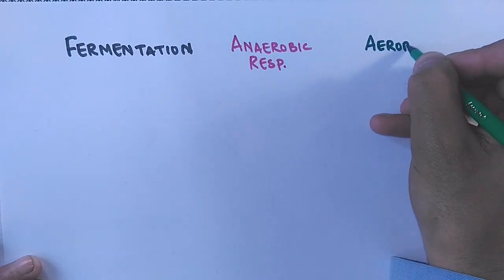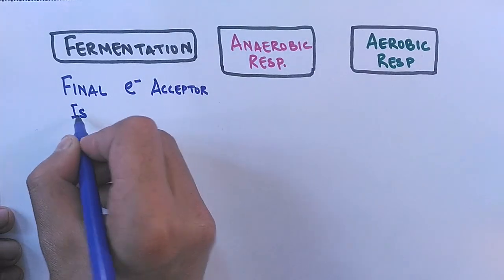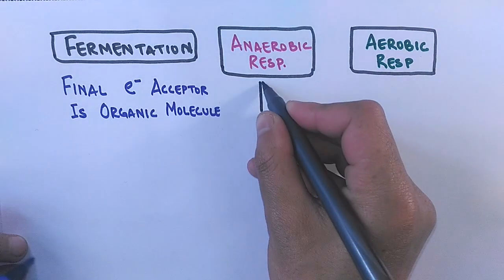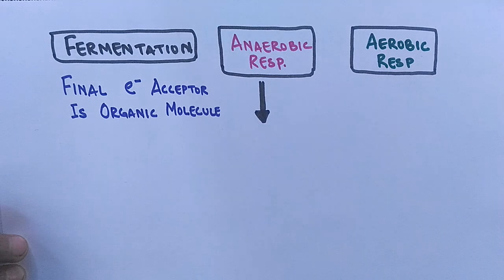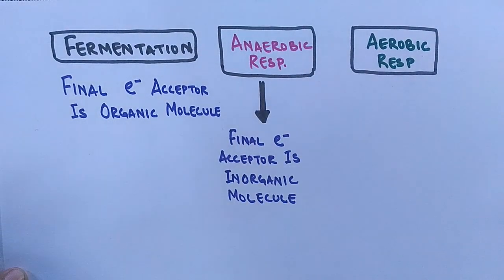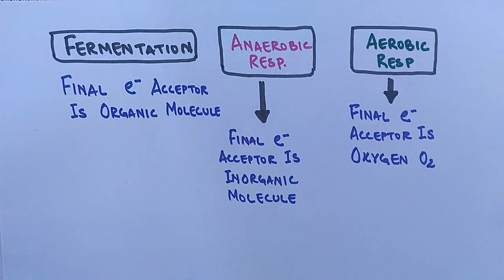Now let's look at the differences between respiration and fermentation. In fermentation, the final electron acceptor in the electron transport chain is an organic molecule like lactic acid or ethanol. In anaerobic respiration, which proceeds without oxygen, the final electron acceptor is an inorganic substance in the ETC, like nitrate or sulfate, but never oxygen. In aerobic respiration, which proceeds in the presence of oxygen, the final electron acceptor in the electron transport chain is oxygen itself.